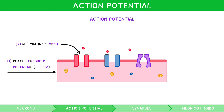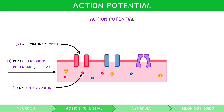Depolarisation uses these open voltage-gated sodium channels to allow sodium to enter the axon, due to the existing concentration gradient created by the sodium-potassium pump. This causes the inside of the axon to become more positive, so the membrane potential rises to plus 30 millivolts.